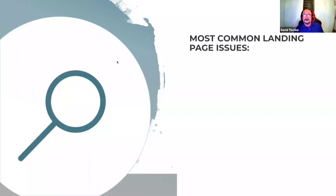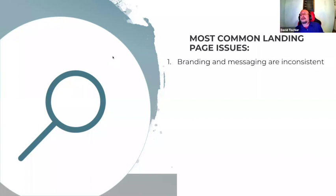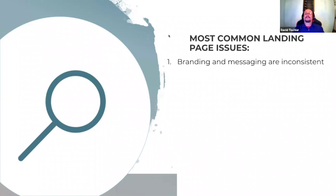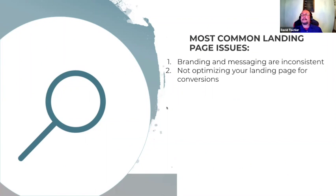Let's talk about the most common landing page issues we see. The first one: branding and messaging are inconsistent. People may see a headline or a particular image in your ad, then they click on it, get to the landing page, and don't realize they're in the right place because the coloring is different, the branding is different, or the headline is a little bit off. Issue number two is simply not optimizing your landing page for conversions.